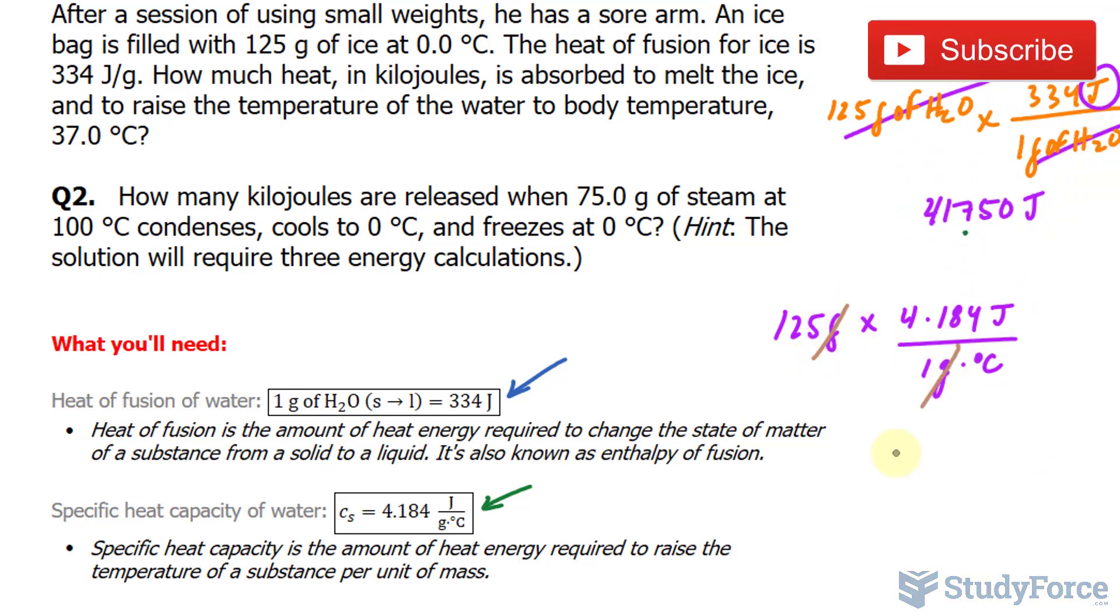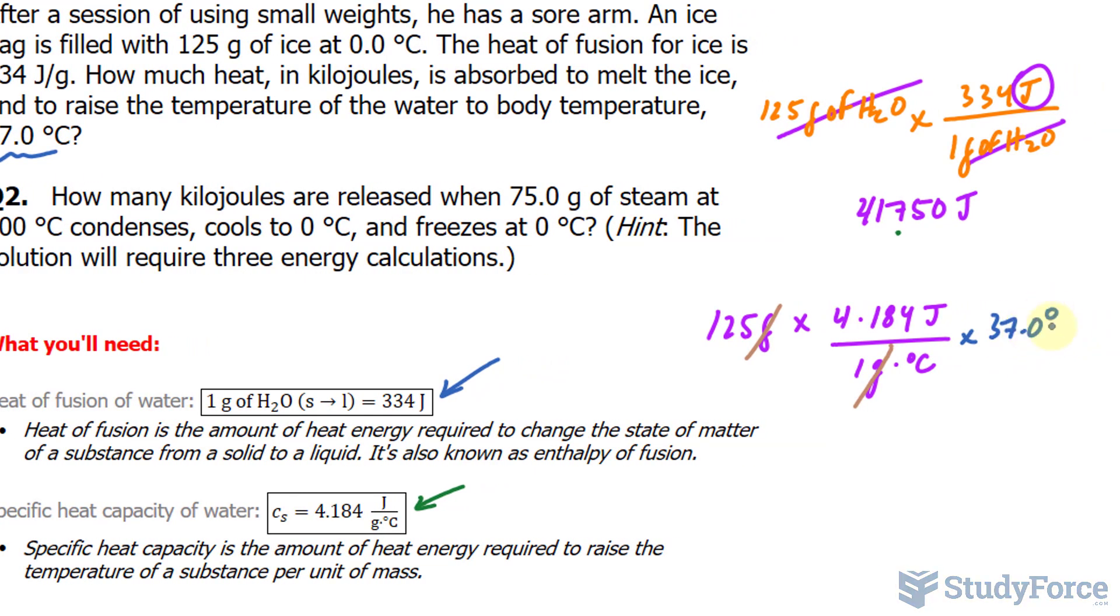And now we're left with a number, if we stop calculating, we'll be left with a number that's in joules per degree Celsius. Now we know that the body reaches 37 degrees, as evident in the question. So I'll multiply this now by 37.0 degrees. And that's in Celsius. And by doing this, this unit and this unit will cancel out, giving us the amount of joules needed to raise from 0 to 37.